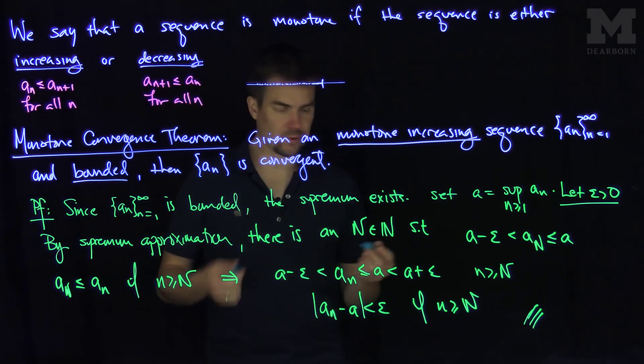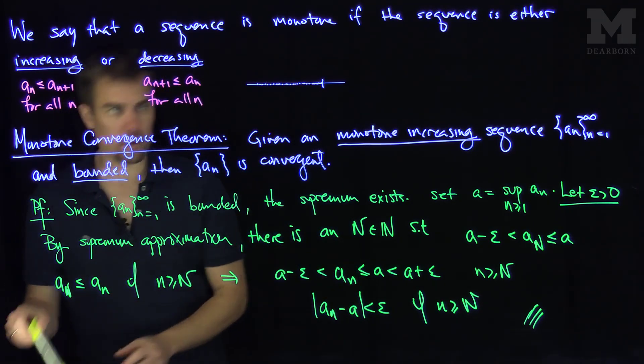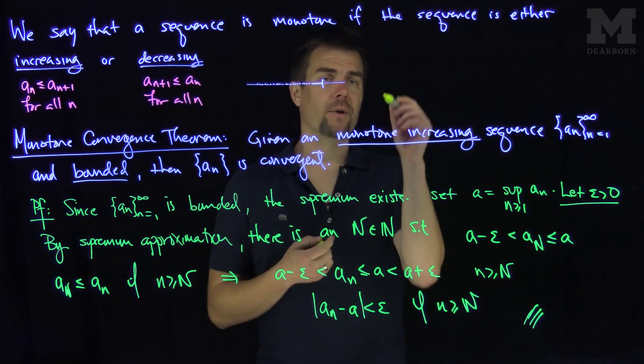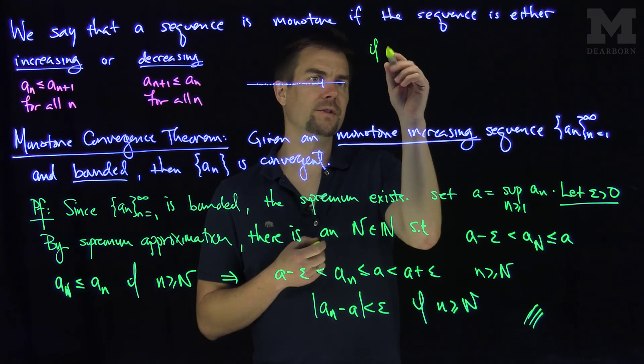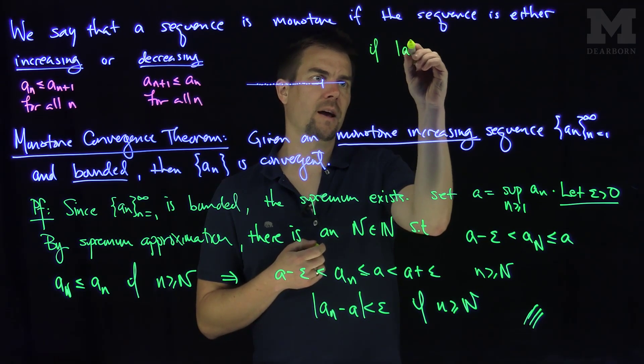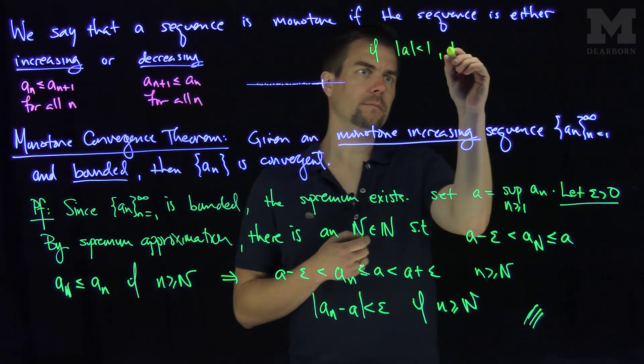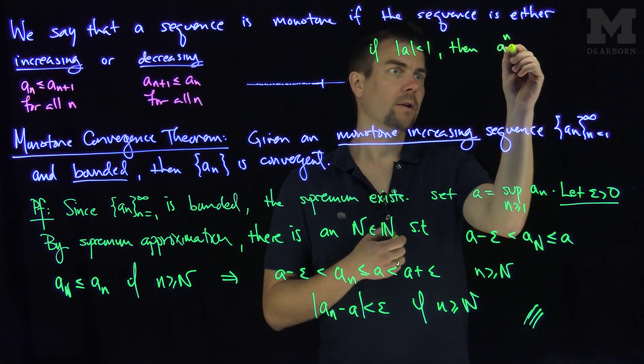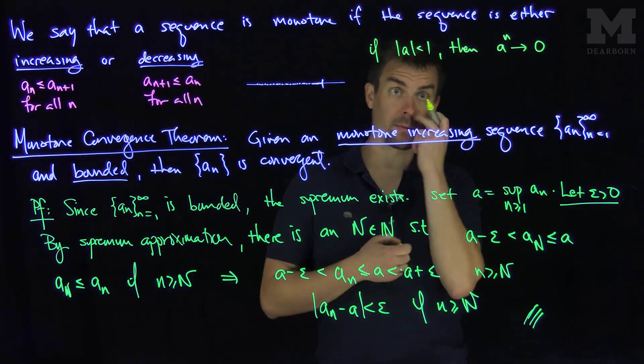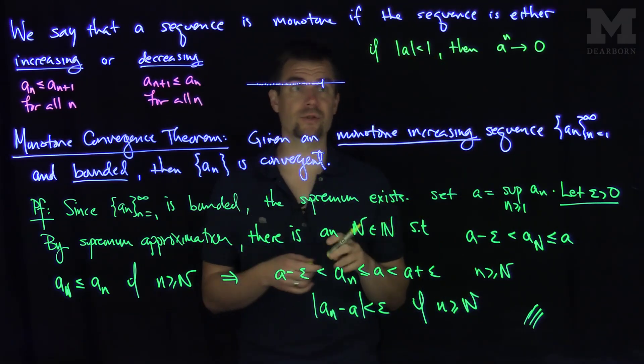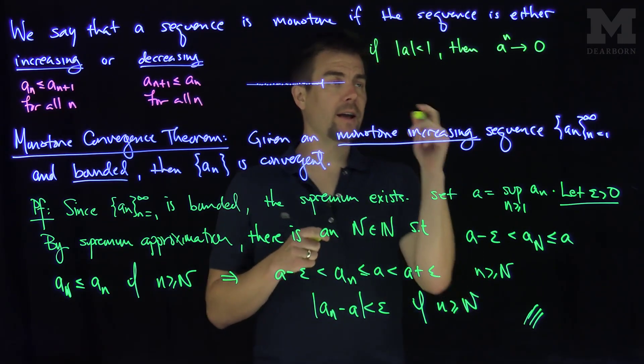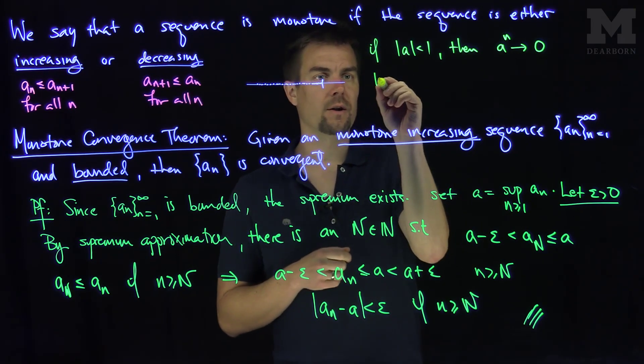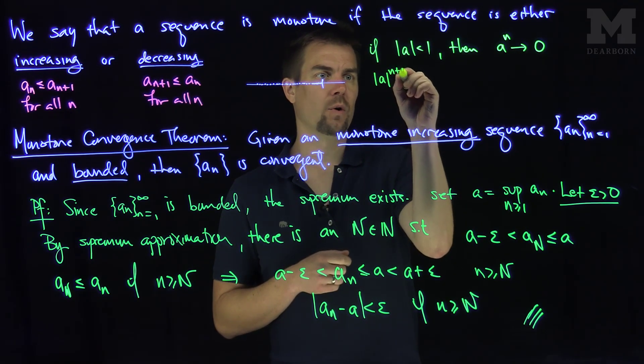A nice consequence of this is something we already know: If the modulus of a is less than 1, then a to the power n converges to 0. We know that if |a| < 1, then |a^(n+1)| = |a| · |a^n|